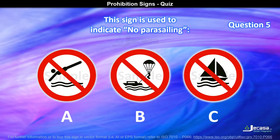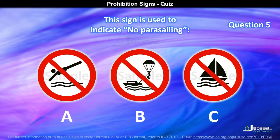Question 5. This sign is used to indicate no parasailing. Is it A, B, or C? The answer is B.